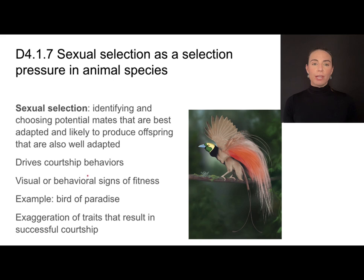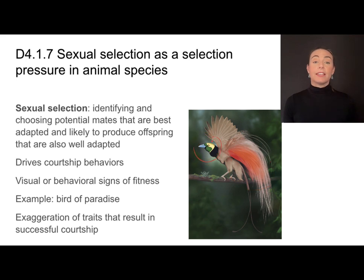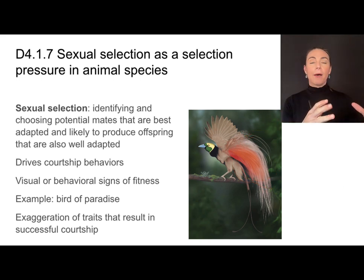These traits drive courtship behaviors. In the bird of paradise, for example, the fantastic plumage is a genetic trait that gives this organism an advantage in sexual selection during its courtship process — it will show off those feathers as a behavior driven toward sexual selection. These exaggerated traits, like elaborate feathers or wild coloration, are results of successful courtship. They are the traits selected by potential mates, and they become more and more exaggerated as individuals with those traits pass along their heritable characteristics more often.